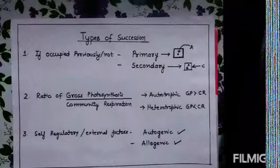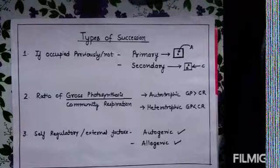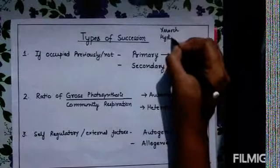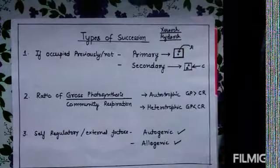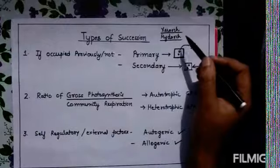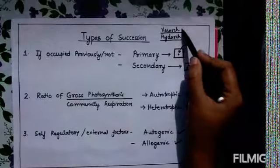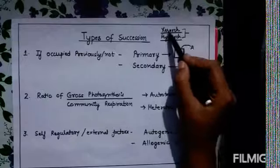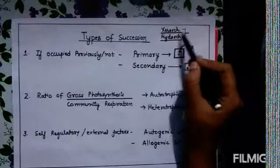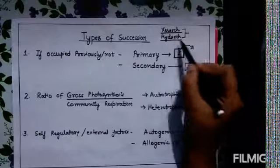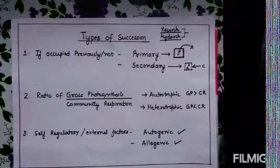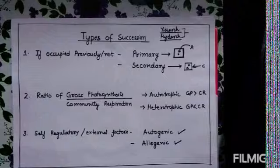We have also heard about two terms — xerarch and hydrarch. Some authors classify these as types of succession based on the particular kind of species or climax community. Xerarch succession starts on a dry habitat and is known as xerarch succession. Hydrarch succession is where wet conditions are present or a wet surface is being colonized. This is all about ecological succession, its mechanism, and its types.